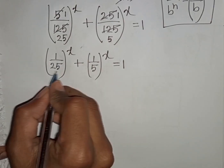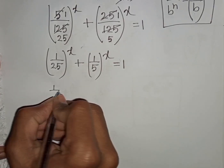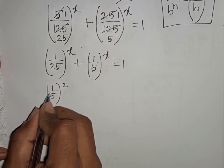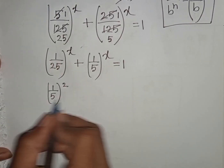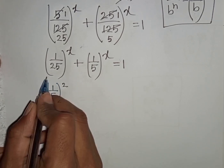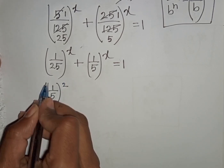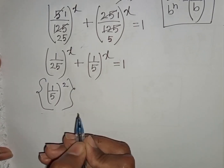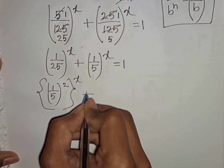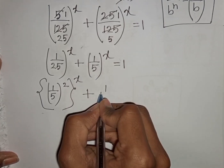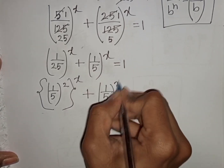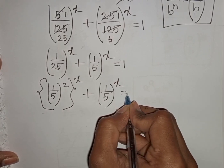Now 1/25 can be written as (1/5)^2, since 1^2 = 1 and 5^2 = 25. So we have ((1/5)^2)^x + (1/5)^x = 1.